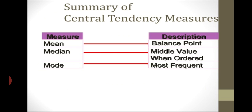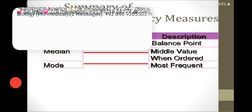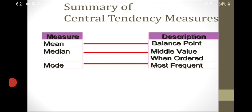Grouped data is data expressed in groups, such as 1, 2, 3, 4, 5, 6, 7. Ungrouped data is data expressed in terms of a table. Don't confuse the two: when data is expressed in a table that is known as ungrouped data, and data expressed in terms of numbers is grouped data.